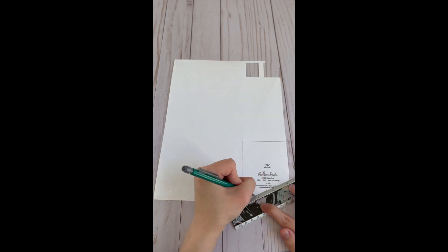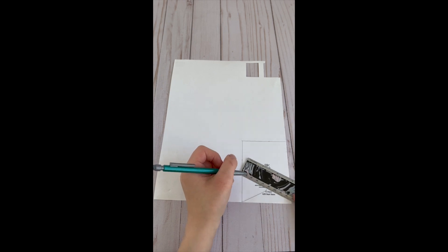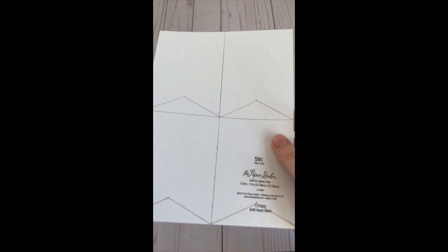Then I marked a mark in the middle about three-fourths of an inch from the bottom and drew two lines to the corners.